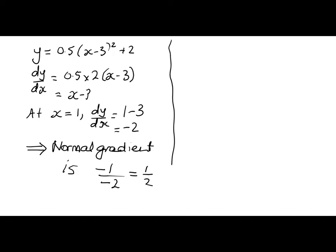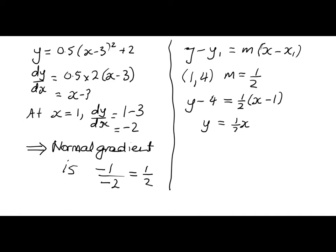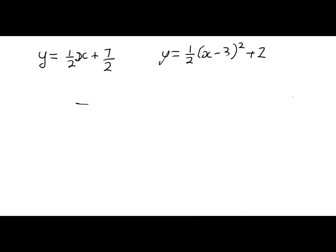Now we're going to use the equation of a straight line to figure out our normal equation. So y minus y1 is equal to m times x minus x1. My point is 1, 4, and m is my normal gradient. So y minus 4 is equal to 1 half x minus 1. Y is equal to 1 half x minus 1 half plus 4, which is 1 half x plus 7 over 2, or 3.5. So that's the equation of the straight line on the graph. Now we're going to find the intersection of that with the parabola. Okay, I've written up the two equations that we've got. This one is the straight line. That's the normal equation. And this one is the parabola.